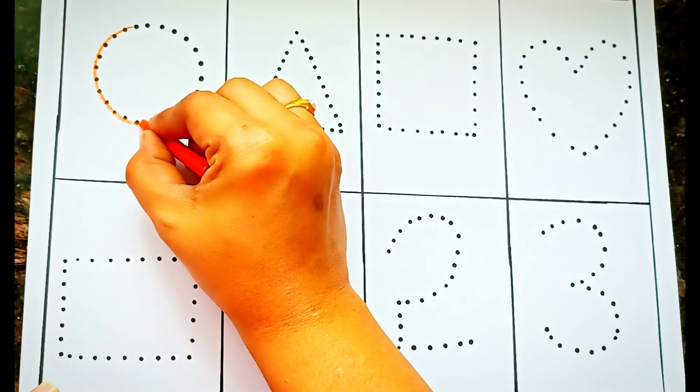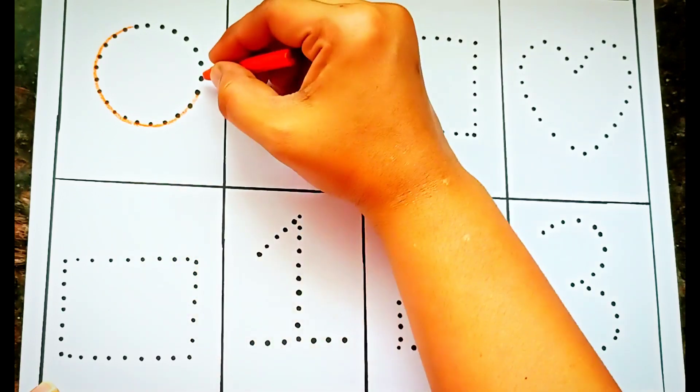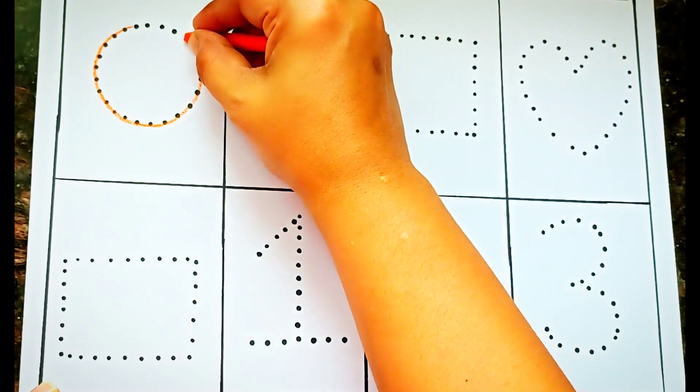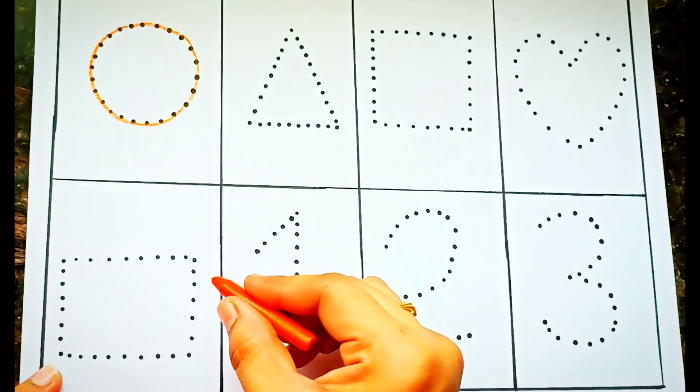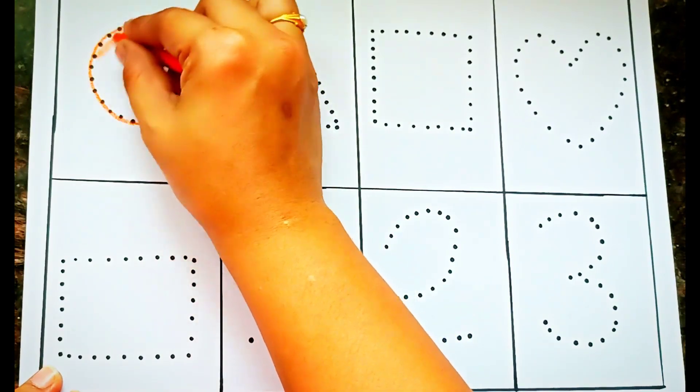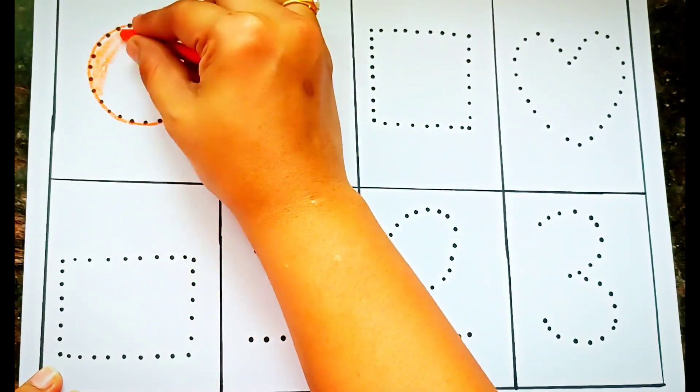Which shape is this? This is a circle. Let us draw a circle in orange color.